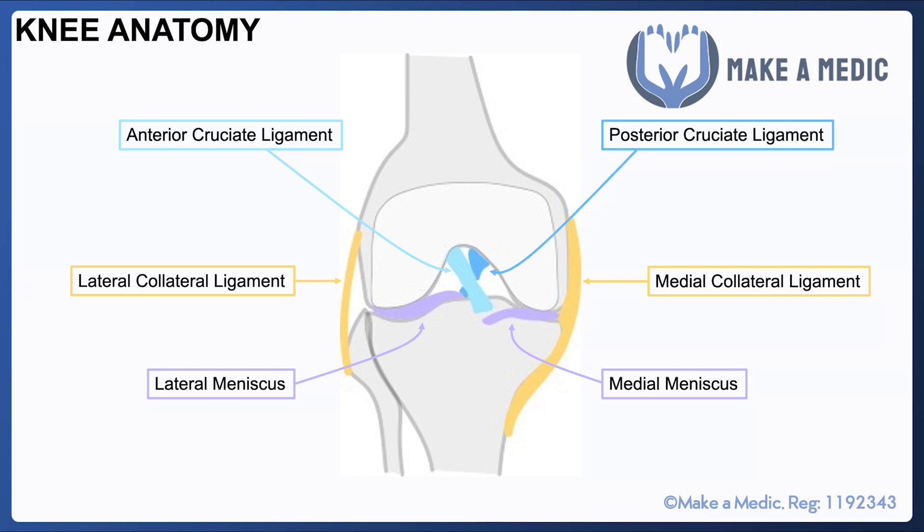We then have the anterior and posterior cruciate ligaments, which essentially prevent the end of the femur from sliding around on top of the tibia. ACL and PCL injuries are usually seen in the context of sport, and there are a few examination findings that can help you identify these injuries.